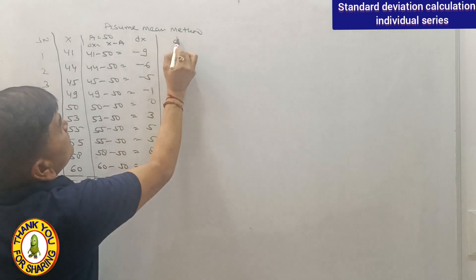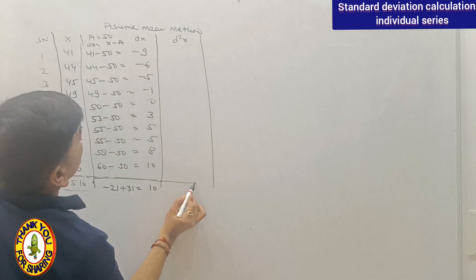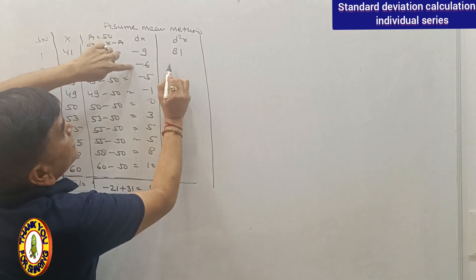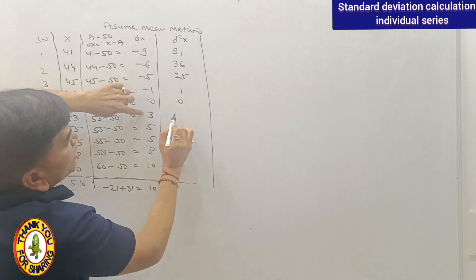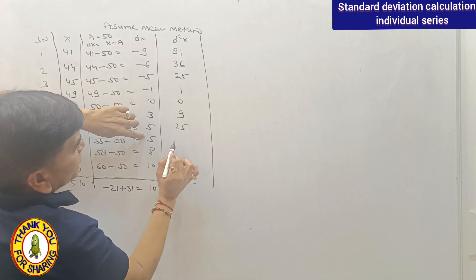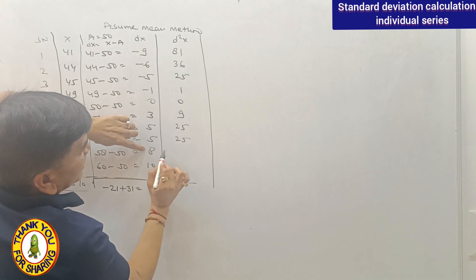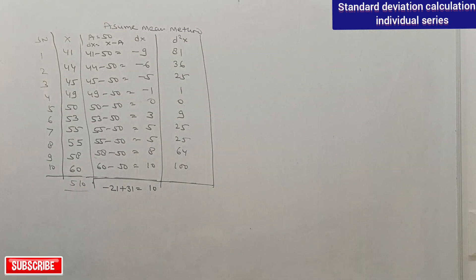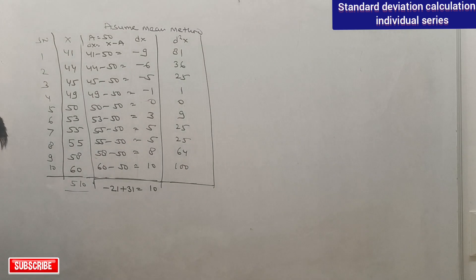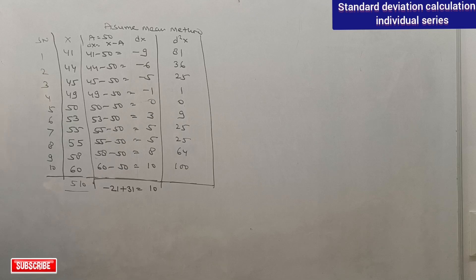Now dx squared: 9²=81, 6²=36, 5²=25, 1²=1, 0²=0, 3²=9, 5²=25, 5²=25, 8²=64, 10²=100. Adding: 81+36+25+1+0+9+25+25+64+100 = 366. So sigma dx squared is 366.